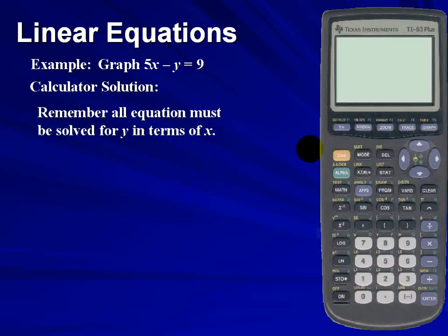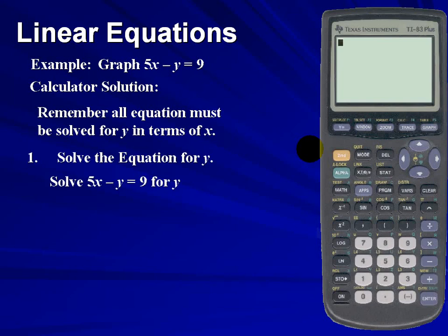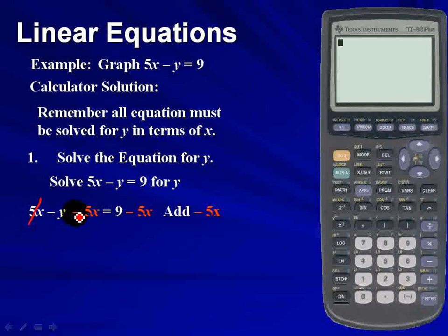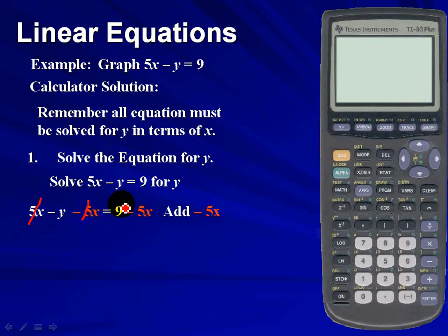Keep in mind that we must solve our equation for y. So in attempting to solve for y, the first thing we should do is add a negative 5x to both sides. And once we add a negative 5x to the left side, notice that the variable on the left cancels.